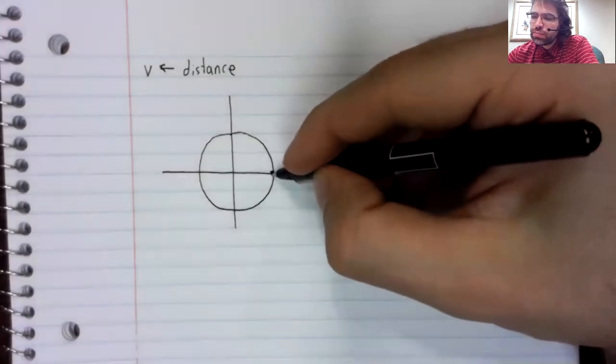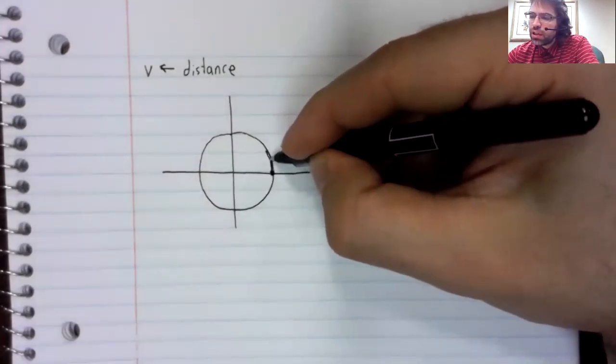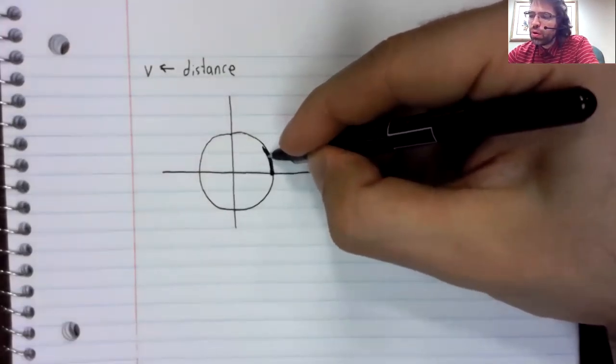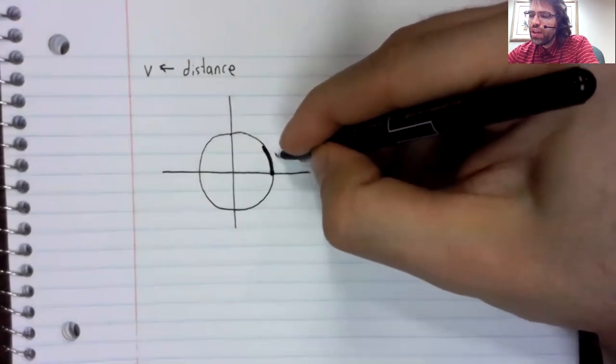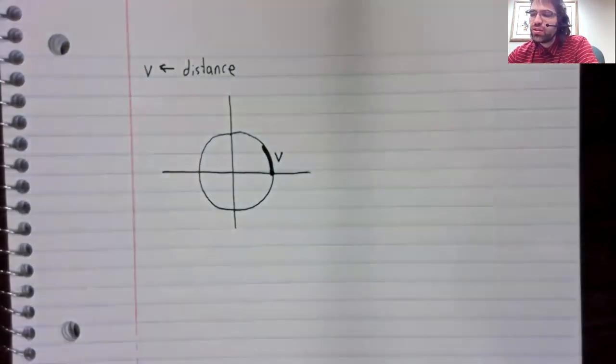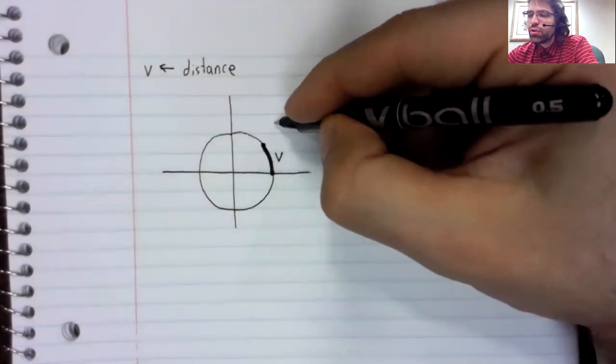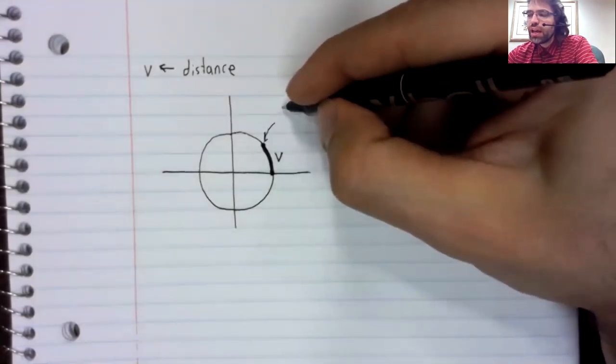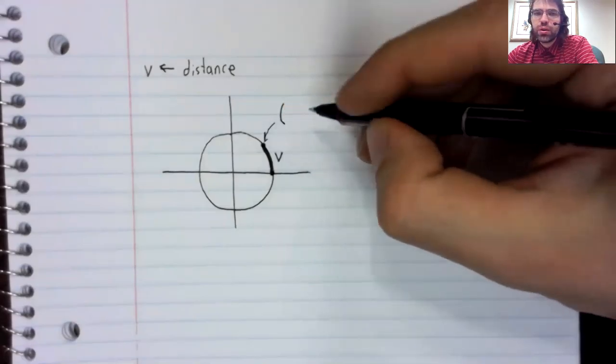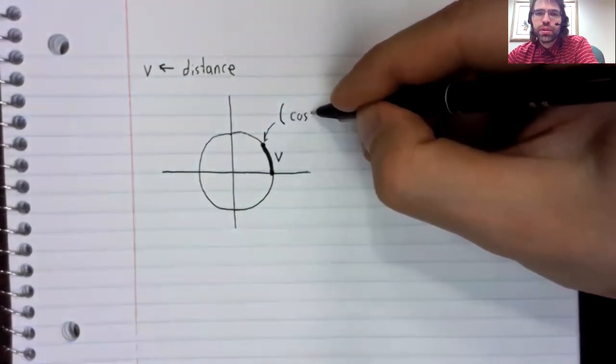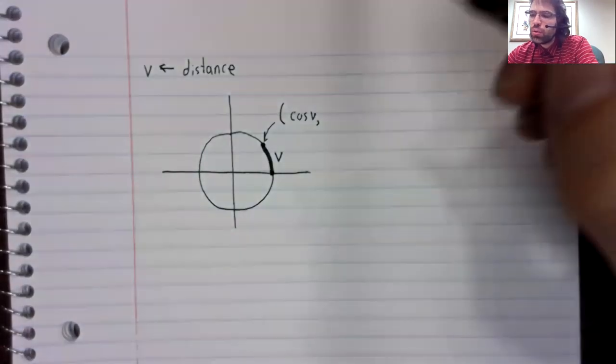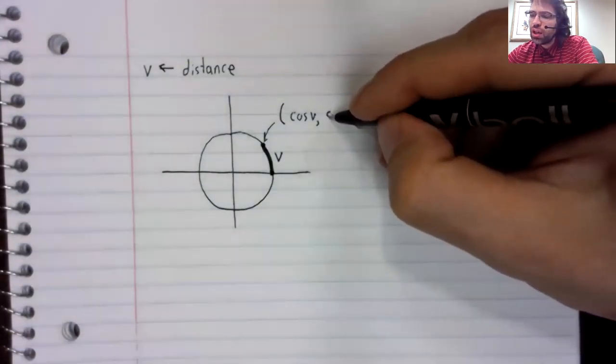So the textbook will think of V not as an angle, but as a distance. In particular, the textbook will think of the wrapping function. We start here. And we travel V units.